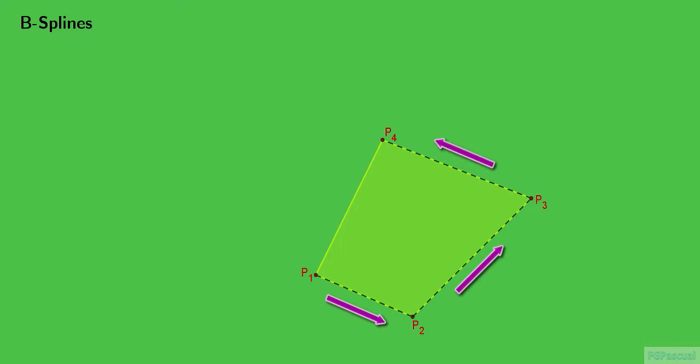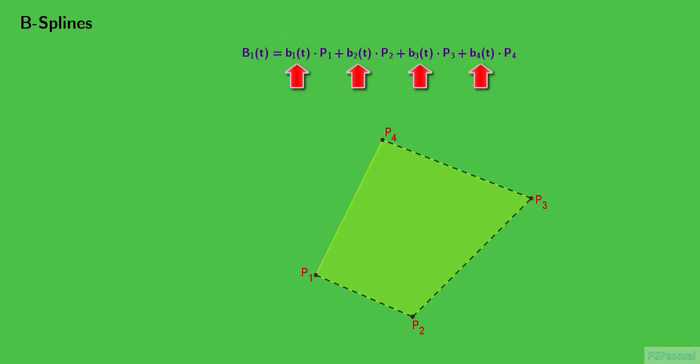At this point, we present the formula for the B-spline curve for P1 through P4. We define the curve, which we call capital B1 of t, parametrically. Lowercase b1, b2, b3, and b4 are real-valued functions of t. Here, t goes from 0 to 1.